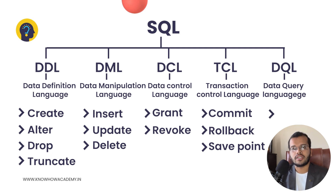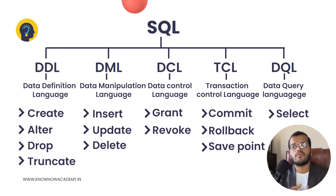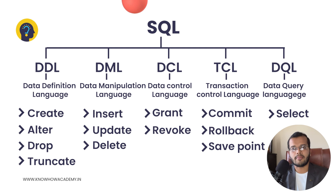The next language is DQL — Data Query Language — where we have a command called Select. Select is used when you want to see or fetch the entire information you have created in a table. So under SQL we have: DDL — Data Definition Language, DML — Data Manipulation Language, DCL — Data Control Language, TCL — Transaction Control Language, and DQL — Data Query Language. Under each language, we have different commands.